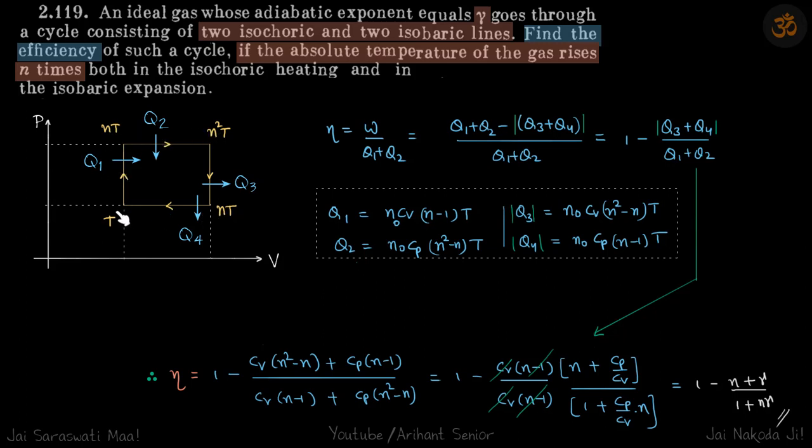So we have the temperature at all four nodes, and we need to find the efficiency. Efficiency is work done in the cycle divided by q1 plus q2. We can see that heat is gained by the system in this process and this process, and heat is released in these two processes.